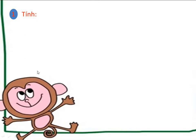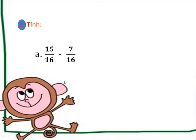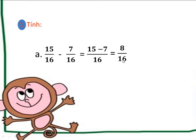Bài tập 1: Tính. Có 4 phép tính là A, B, C và D. Chúng ta dễ dàng nhận ra đây là các phép tính trừ 2 phân số cùng mẫu số. Cô sẽ hướng dẫn các em làm bài tập A trước. Nhắc lại cách trừ 2 phân số cùng mẫu, ta trừ tử số của phân số thứ nhất — ở đây là 15 — cho tử số của phân số thứ 2 là 7, và giữ nguyên mẫu số là 16. Ta được kết quả bằng 8 phần 16. Các em chú ý, 8 phần 16 là phân số chưa tối giản, nên khi tính xong, chúng ta cần rút gọn bằng cách chia cả tử và mẫu cho 8.